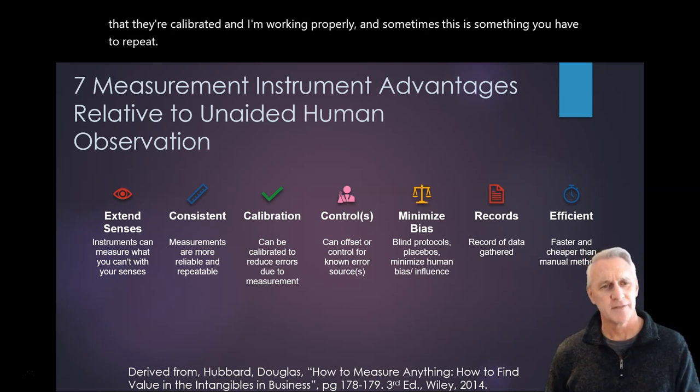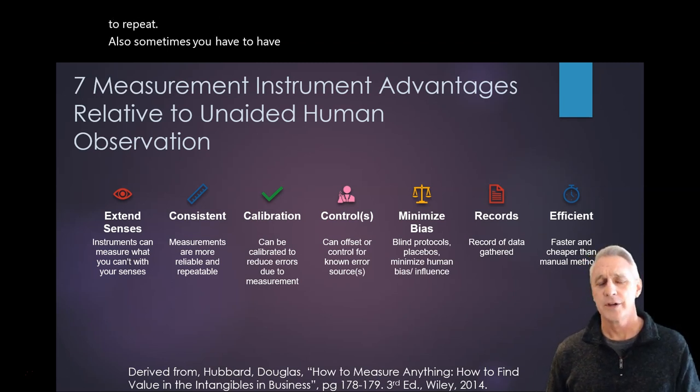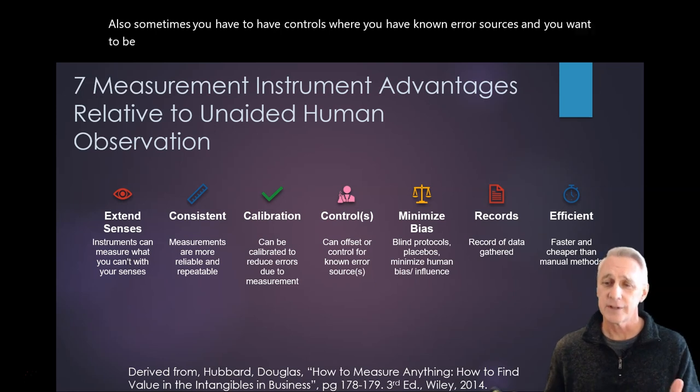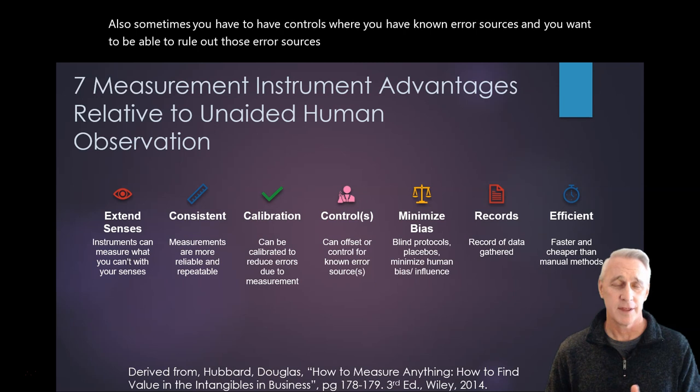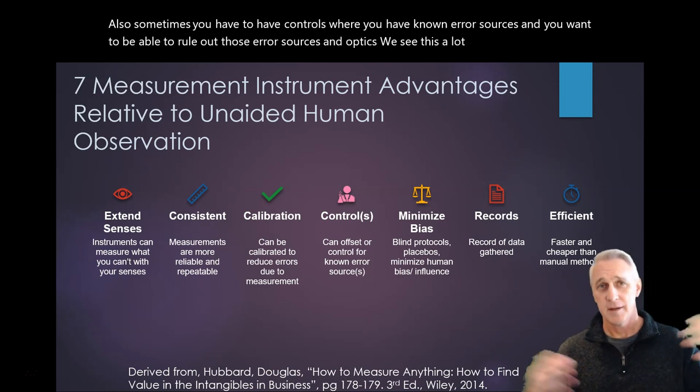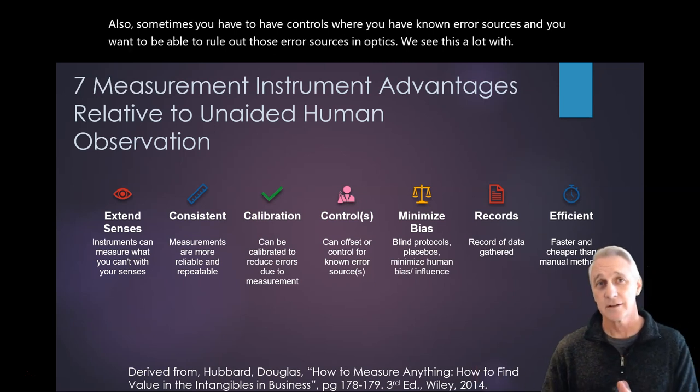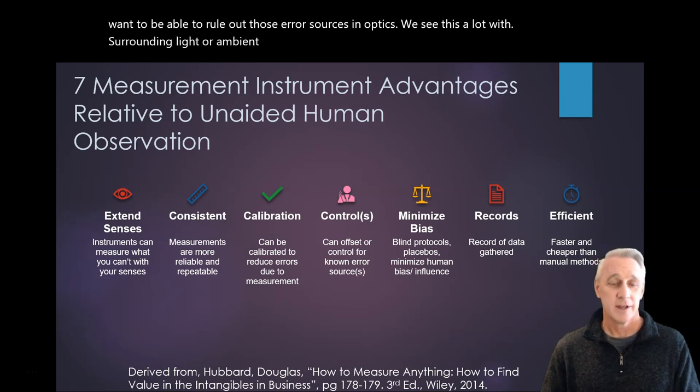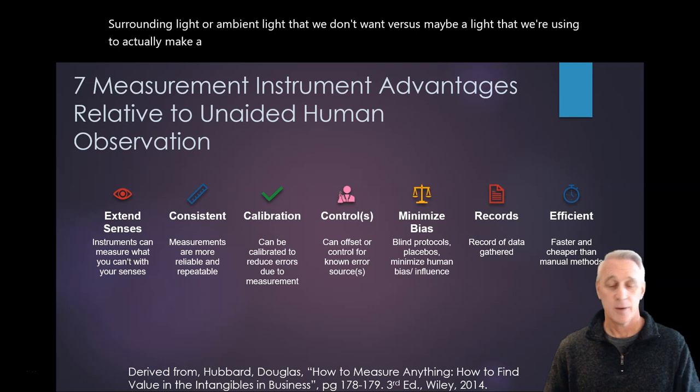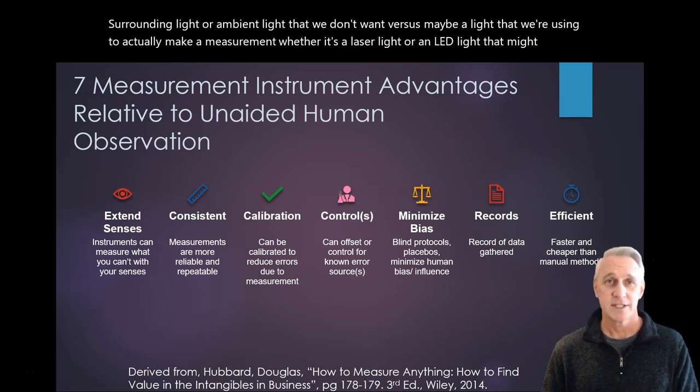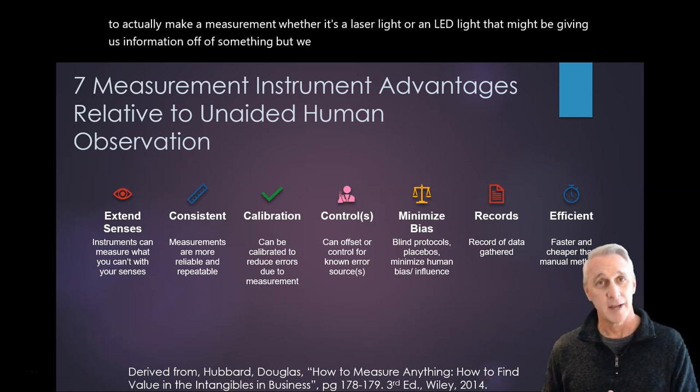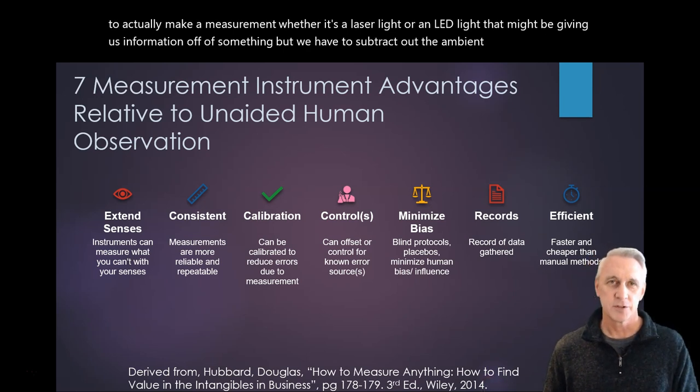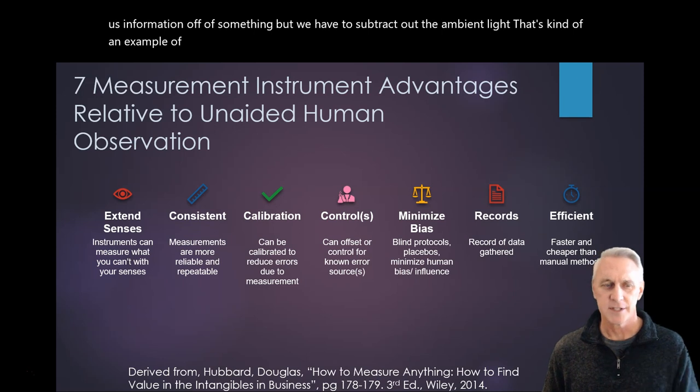Also sometimes you have to have controls where you have known error sources and you want to be able to rule out those error sources. In optics, we see this a lot with surrounding light or ambient light that we don't want versus maybe a light that we're using to actually make a measurement, whether it's a laser light or an LED light that might be giving us information off of something. But we have to subtract out the ambient light. That's kind of an example of control.